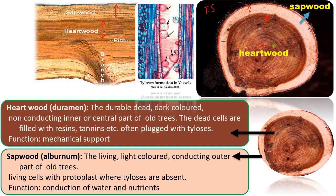Sapwood is meant for conduction of water and nutrients, and the durable heartwood is used for making furniture. As sapwood is without thyloses or resin or tannin deposition, this wood is susceptible to attack by fungus, insects, and termites.